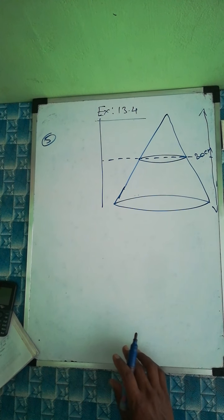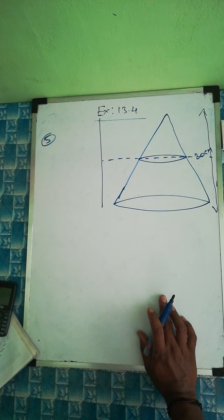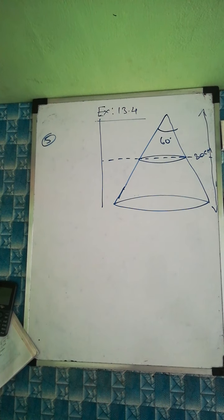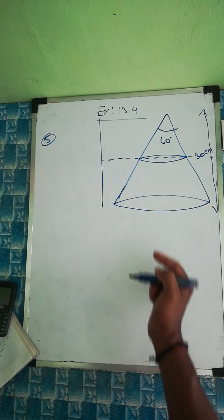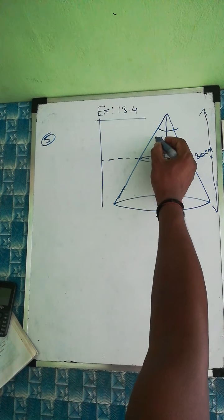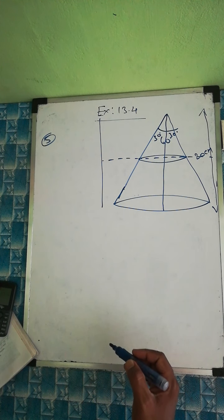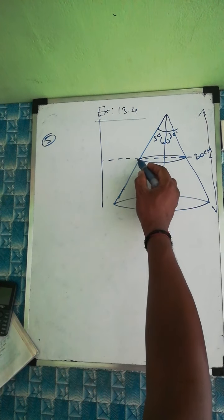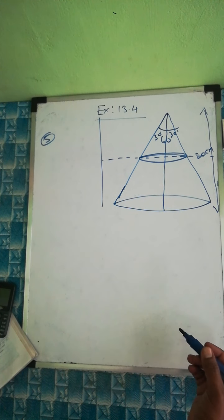Question 13.4 number 5: A metallic right circular cone of 20 centimeter height and whose vertical angle is 60 degrees. The cone is cut into two parts in the middle, so the vertical angle of 60 degrees becomes 30 degrees on each side. The first part obtained is drawn into a wire of diameter 1/16 centimeter. Find the length of the wire.